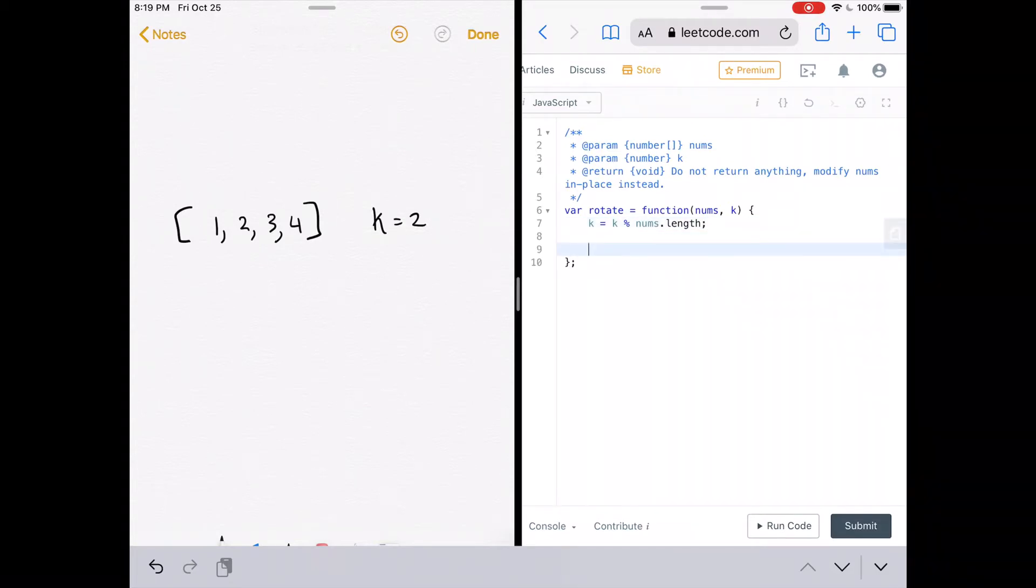Alright, so now we just need a while loop. So while k is greater than zero, what do we need to do? We need to pop the last element off of the array, so nums.pop. And what do we need to do? We need to add that same element to the front of the array.